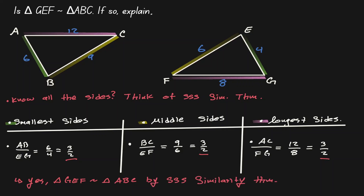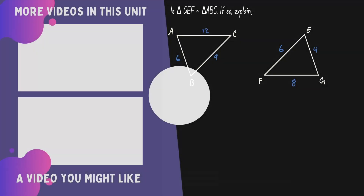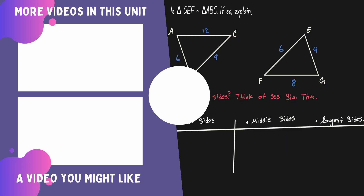We can go one step further and claim that the scale factor is the value of 3 over 2. Notice that all numerators come from the same triangle — the triangle on the left — and all denominators come from the same triangle — the triangle on the right. If you would like to continue learning about mathematics, you can check out the videos on the left.